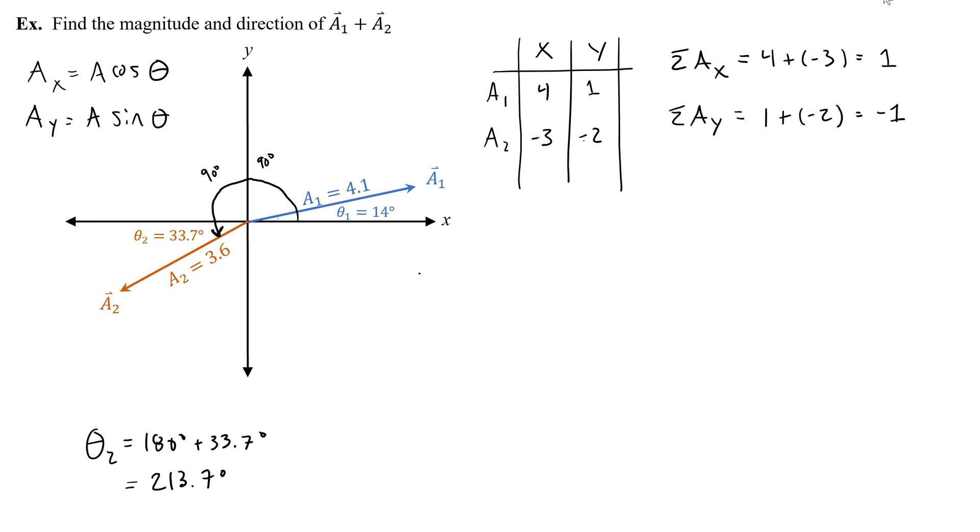So now if I draw that vector, like roughly, I know it's going to point down because it'll have a positive 1 and a negative 1 component. And I'm going to find the magnitude by doing the square root of 1 squared plus negative 1 squared, which gives me the square root of 2, or we'll write that as 1.4.